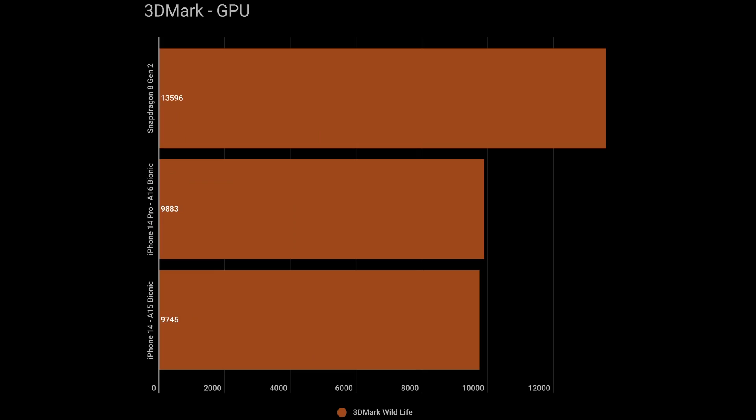For GPU performance things are very different. In 3DMark Wildlife the Snapdragon 8 Gen 2 scores 13,596, while both Apple devices come in under 9,900 — 9,801, 9,883, and 9,745. That works out to a 37% performance increase for the Snapdragon 8 Gen 2, so the GPU is doing a much better job there.